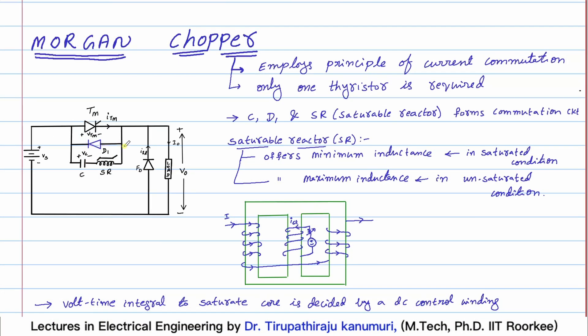Today we are going to discuss about the Morgan chopper. This Morgan chopper employs the basic working principle of current commutation only. The current passing in the commutation circuit will try to pass through the main thyristor, thereby turning it off by decreasing the current through it. The difference from the previous circuit is that in current commutation we had two thyristors, whereas in this circuit there is no auxiliary thyristor.